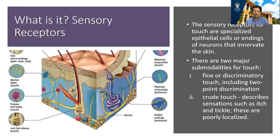When we look at this, we find that there are two submodalities for touch. There's fine or discriminatory touch, and there's also crude touch. Crude touch describes sensations such as itching and tickle — these are vague and difficult to localize. Fine touch is very discrete and gives you high spatial resolution, allowing you to tell exactly where on the body is being touched.